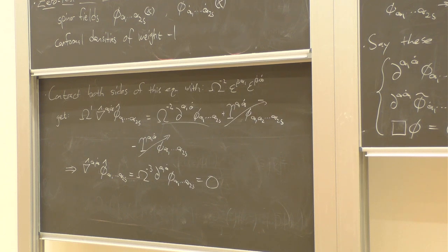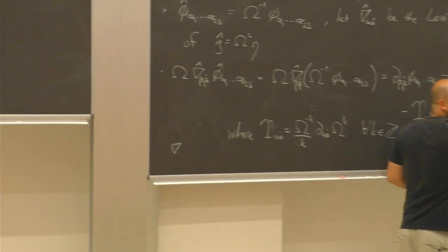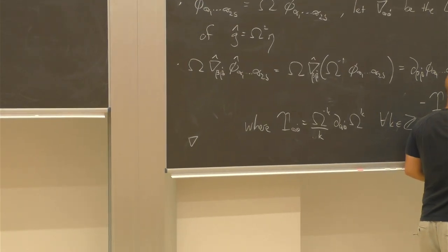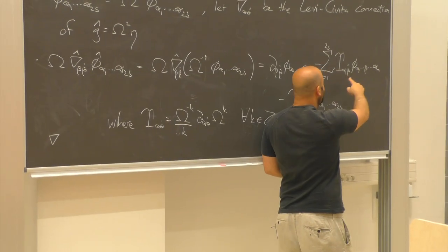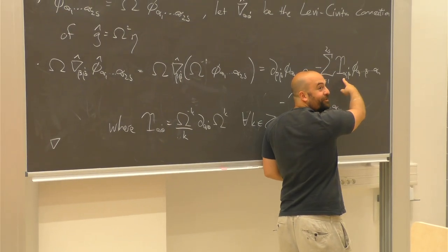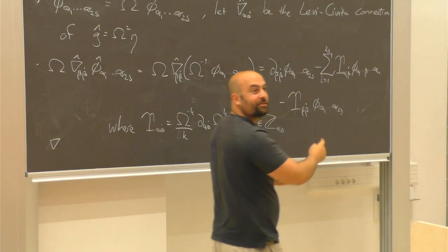Thank you for calling me out on this. What this notation means is: I take the i-th alpha index and I replace it with a beta, and then that i-th alpha index is appearing on the epsilon. That's what it means.